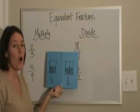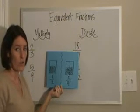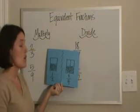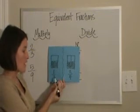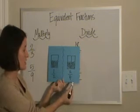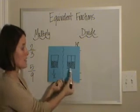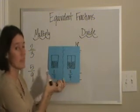Equivalent fractions are two or more fractions using different numbers that represent the same amount. For example, one-half and two-fourths are equivalent fractions. If I shade one box out of two or two boxes out of four, I've shaded the same amount.